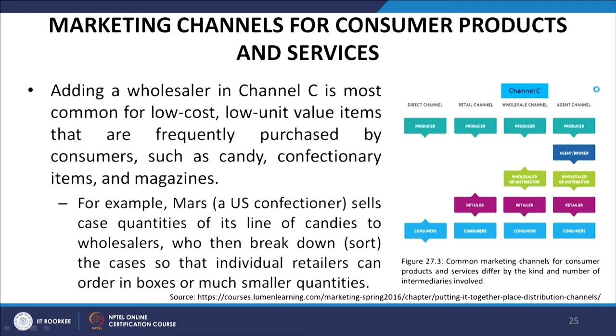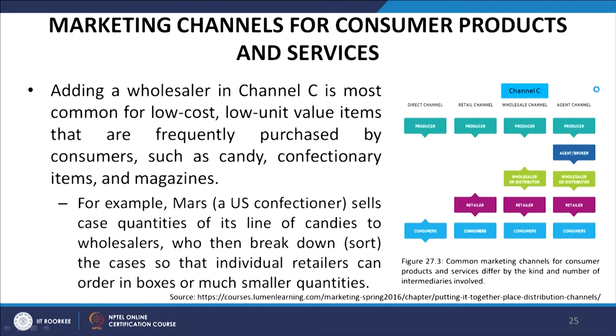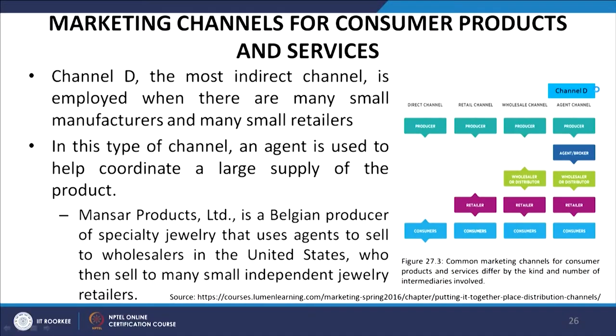Channel C, the wholesale channel, is most common for low-cost, low-unit-value items frequently purchased by consumers, such as candy, confectionery items, and magazines. For example, Mars sells case quantities of its candies to wholesalers who then break down the cases so individual retailers can order in smaller quantities. Channel D is the most indirect channel, employed when there are many small manufacturers and many small retailers. An agent is used to help conduct a large supply of the product. Mansard Products Limited, a Belgian producer of specialty jewellery, uses agents to sell to wholesalers in the United States, who then sell to many small independent jewellery retailers.